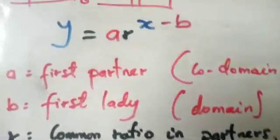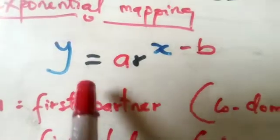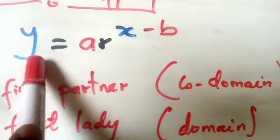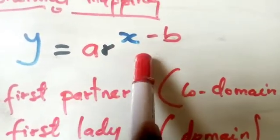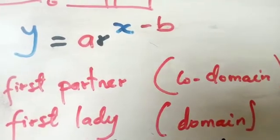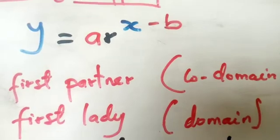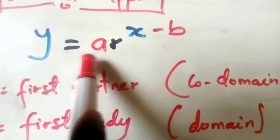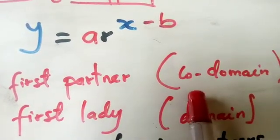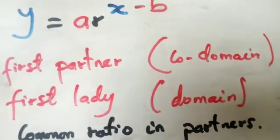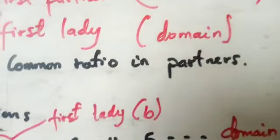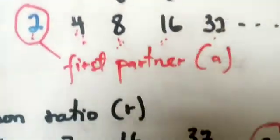Once you confirm it is an exponential mapping, you write the formula down. Then you need to identify the values of a, r, and B. In the formula y = a·r^(X−B): a is the first partner in the codomain, and B is the first lady in the domain.